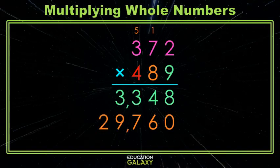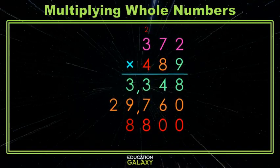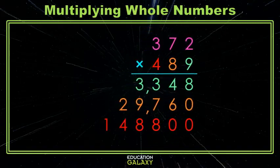Now as we move into the 100's place, the 4, we're multiplying 372 by 400. That's why we have to put two 0's. Now we can just do 372 by 4. 2 times 4 is 8. 7 times 4 is 28. Leave the 8, carry the 2. 3 times 4 is 12, plus the 2 we carried is 14.